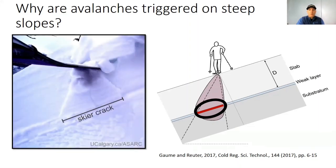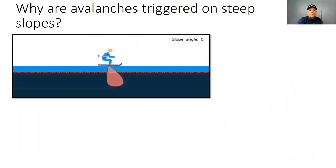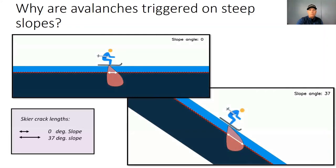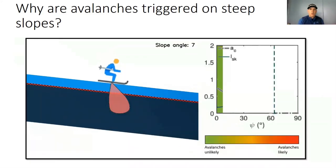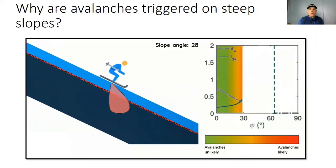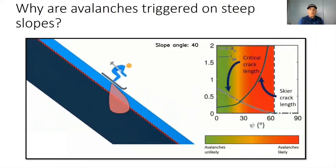The picture on the left shows the weak layer failure under the load of a skier. The skier crack length in this picture is smaller than the critical cut length; consequently, there was no crack propagation along the weak layer. Due to geometry, the skier crack length increases with slope angle. The white arrows represent the skier crack length on a flat and on a 37-degree slope. The chart on the right shows how the critical cut length decreases and the skier crack length increases with slope angle. Therefore, the overall odds of triggering an avalanche increase with slope angle.